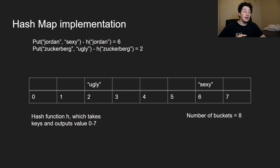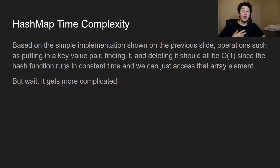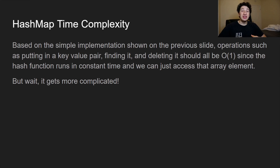For a delete operation, we simply hash the key to be deleted and remove it from the array. So at first glance, all of these operations — put, get, delete — are O(1), because our hash function is O(1) and we're just accessing an element in the array. But it's not actually quite that simple, and we're going to talk about why.